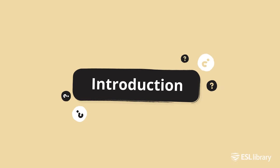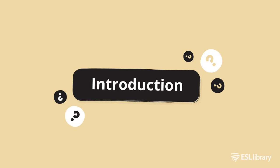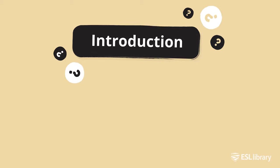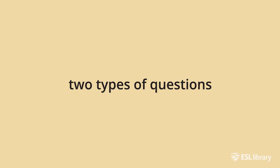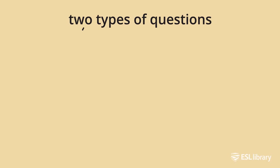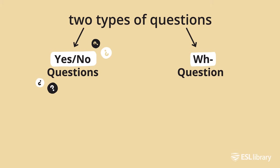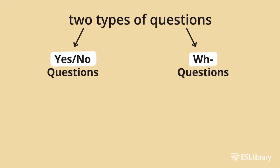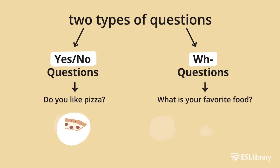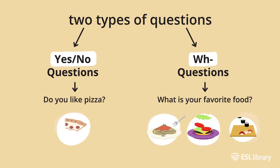What are the most common types of questions in English? There are two common types of questions in English: yes-no questions and wh-questions. For example, 'Do you like pizza?' is a yes-no question, and 'What is your favorite food?' is a wh-question.